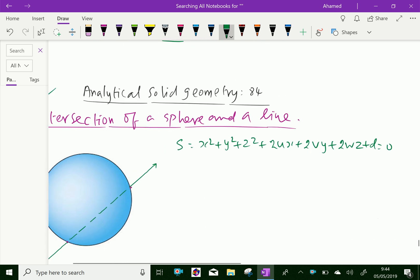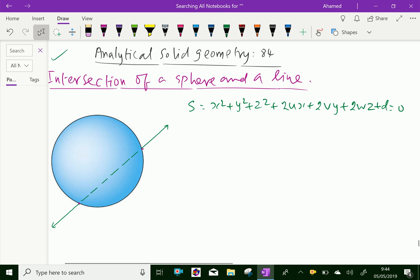This is the equation of the sphere. And the line, the equation of the line is x minus alpha over l equals y minus beta over m equals z minus gamma over n. This is the equation of the line. Let it equal r.